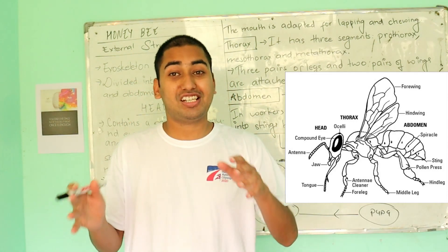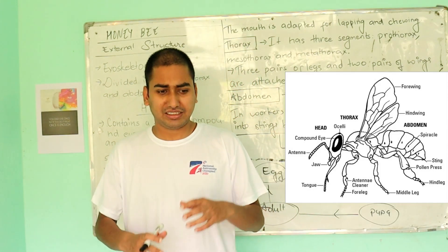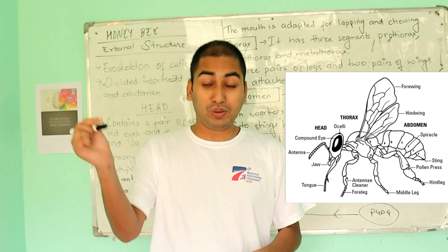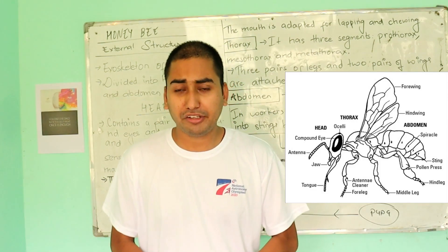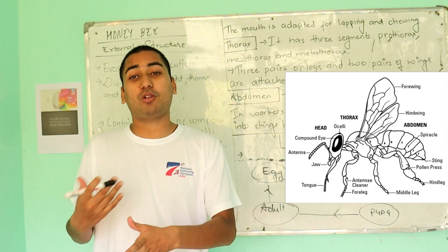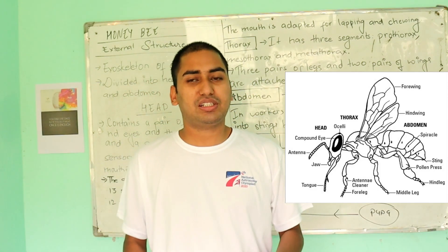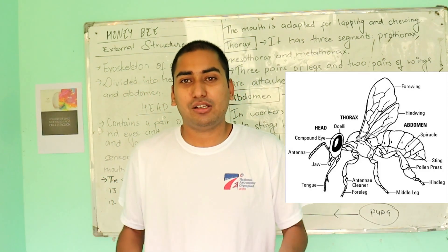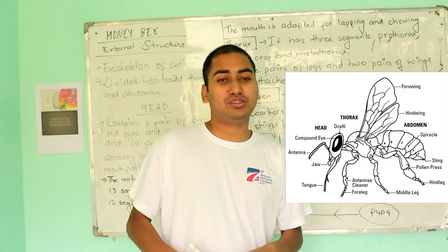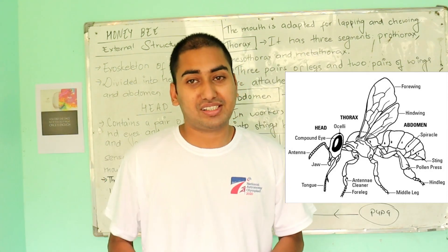There are fertile females and sterile females. In the queen, segments have been modified into a sting. This modified segment forms the reproductive part of the external structure.